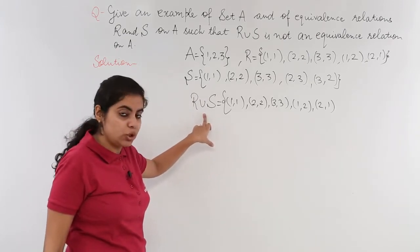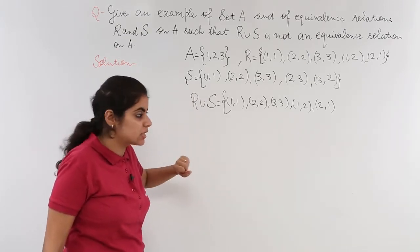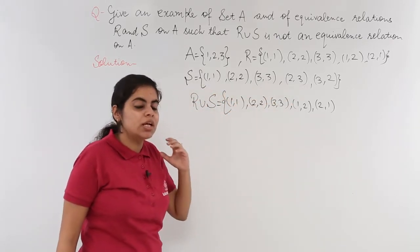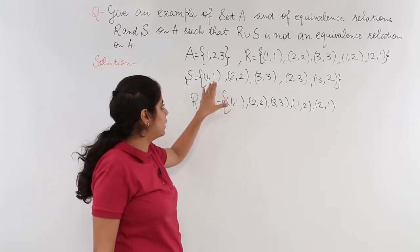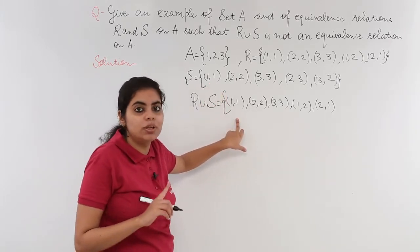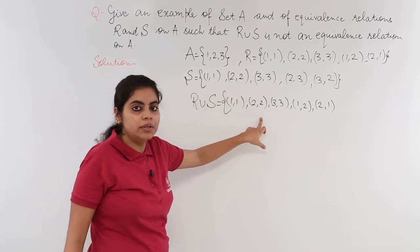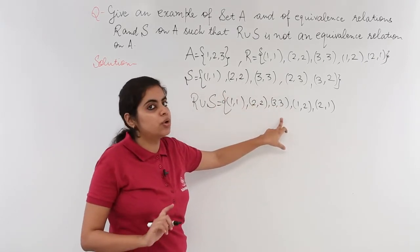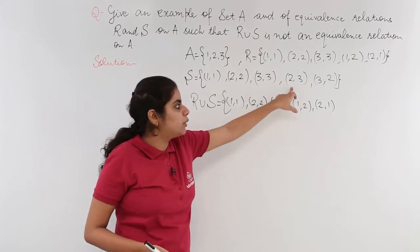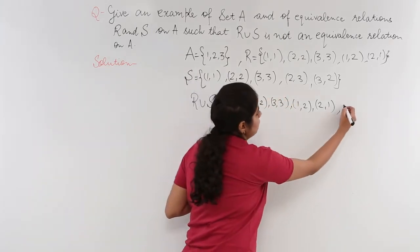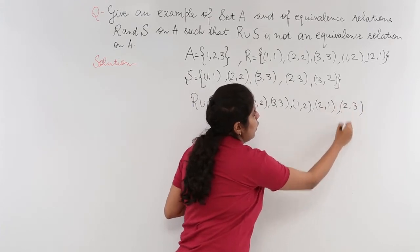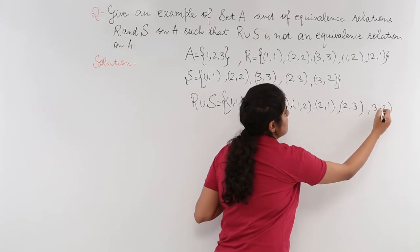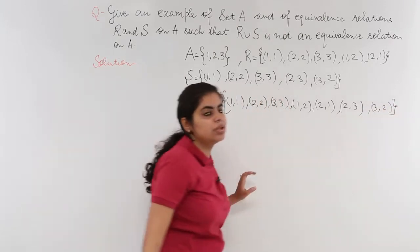Now I apply the union with S. In S, (1,1), (2,2), and (3,3) are already taken so we don't repeat them. (2,3) is not taken — write it. (3,2) is not taken — write it. So R union S = {(1,1), (2,2), (3,3), (1,2), (2,1), (2,3), (3,2)}.